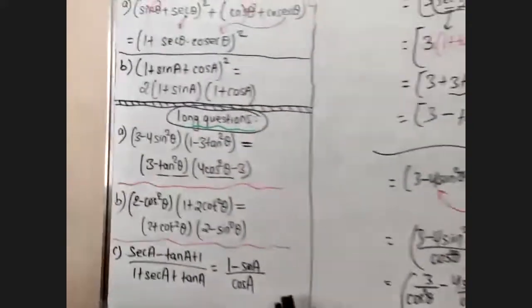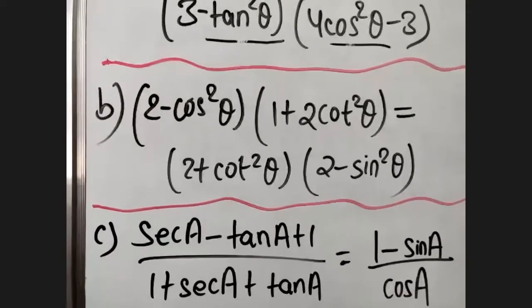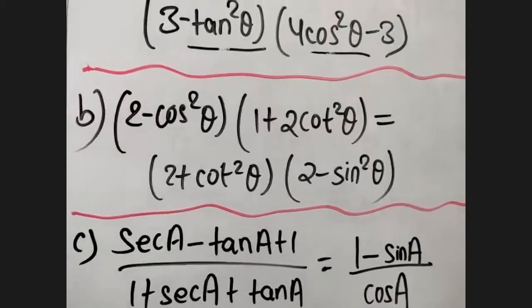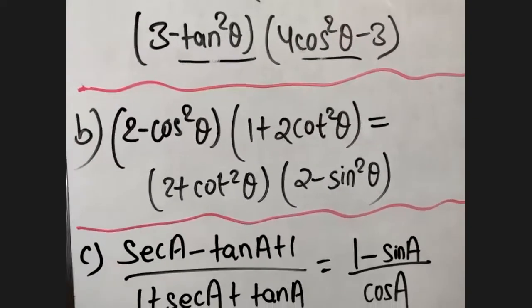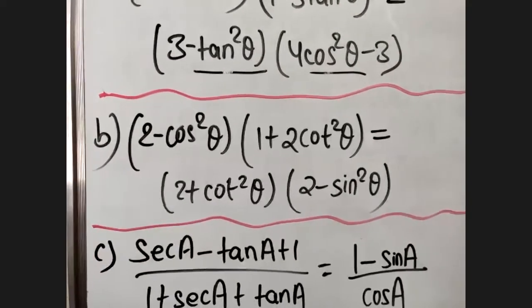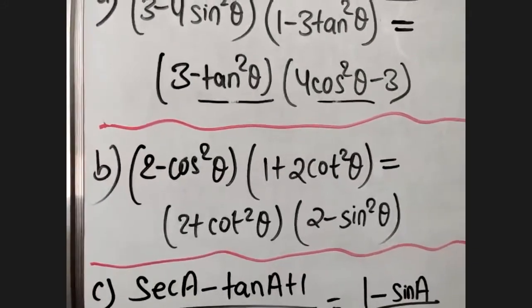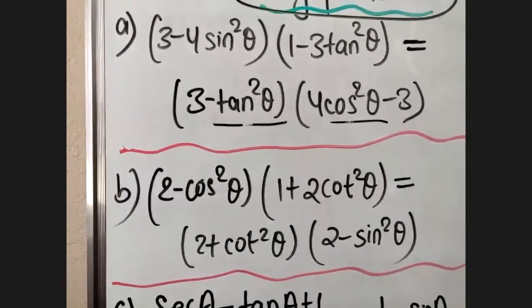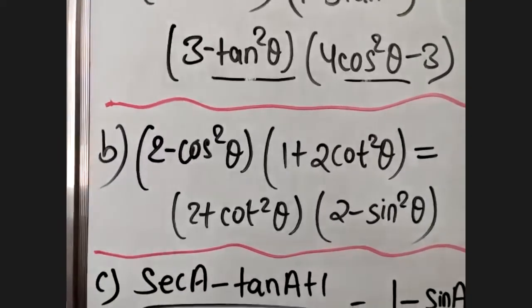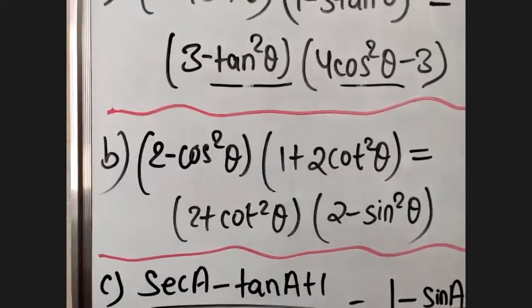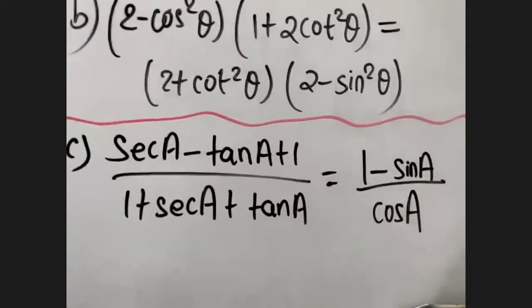We have a similar question B: two minus cos²A over one plus two cot²A equals two plus cot²A times bracket two minus sin²A. This is a similar question so I will give it to you as assignment. Try it yourself, and if you couldn't do it, I will help you.